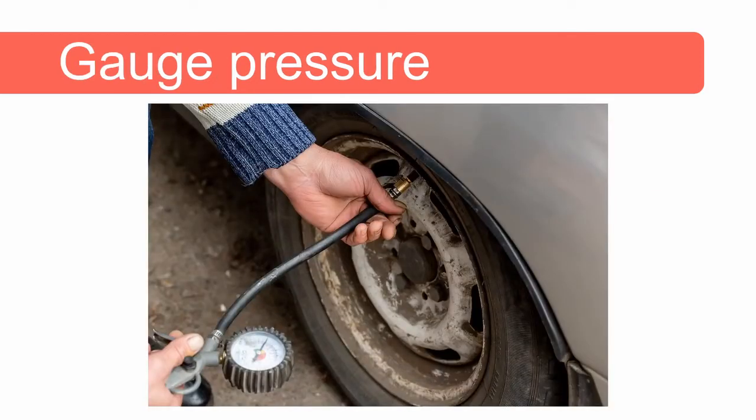Next let's consider gauge pressure. Gauge pressure is the difference between the total pressure inside the container which in this case is the tire of a car and the total pressure outside and usually the pressure outside is equal to the ambient pressure.